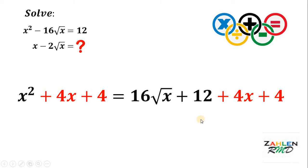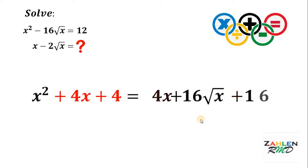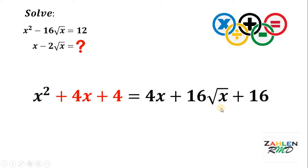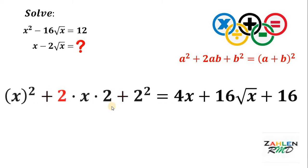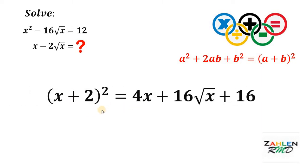To show that, let's simplify the right-hand side a little bit. This is equivalent to 4x plus 16 times square root of x plus 16. Now, take note that if we have a squared plus 2 times ab plus b squared, this is equivalent to a plus b quantity squared. Notice on the left side, 4 can be written as 2 squared and 4x can be written as 2 times x times 2. Therefore, x squared plus 2 times x times 2 plus 2 squared can be factored as x plus 2 quantity squared.